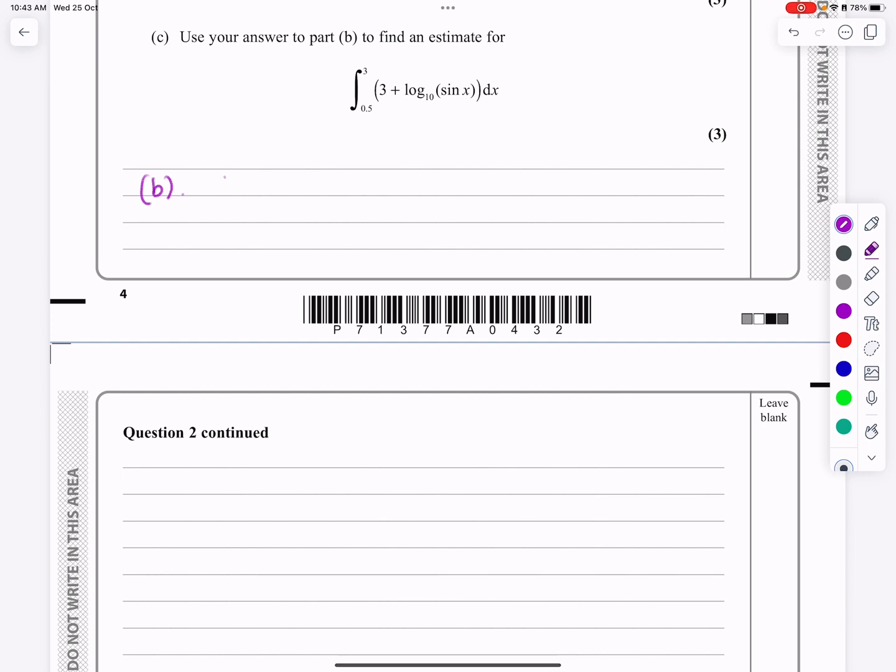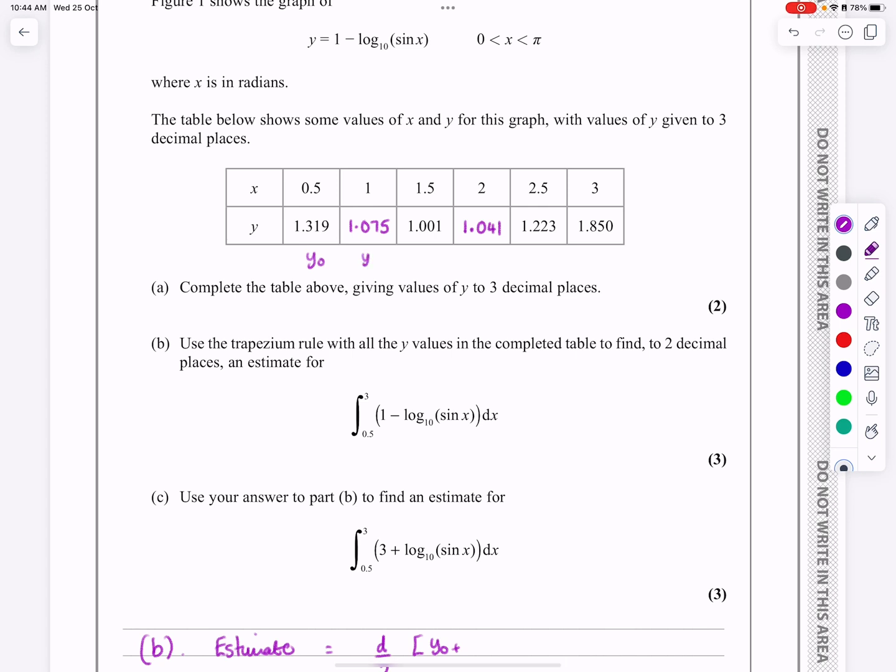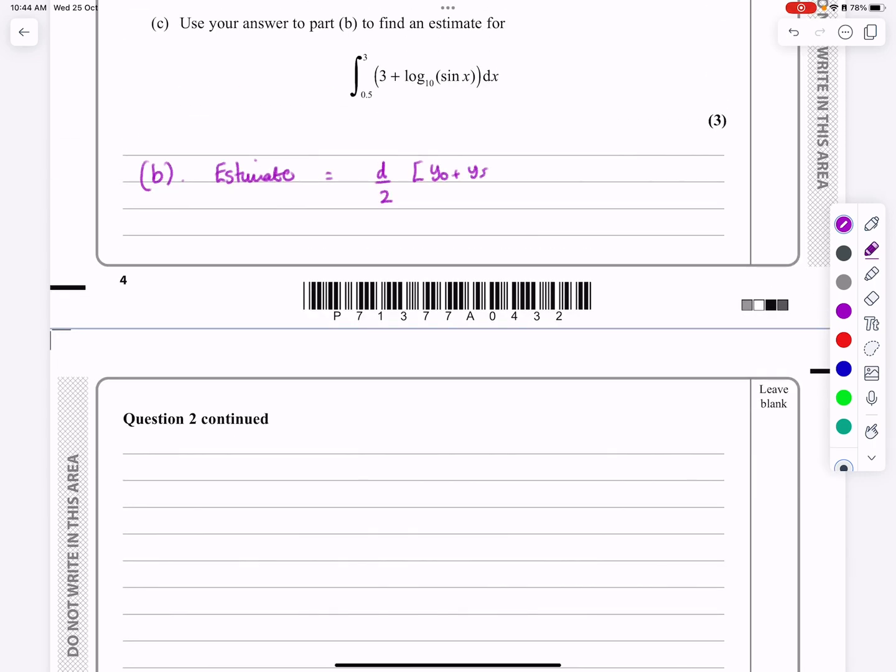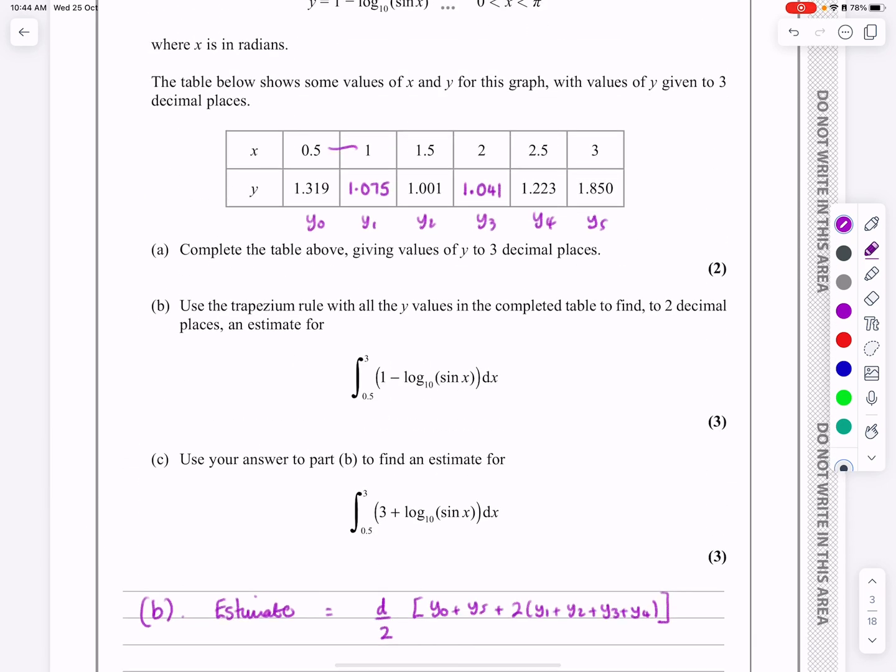This is simply putting the trapezium rule in for this one, and our trapezium rule says that our estimate will be d over 2, and then it's going to be y0 plus y5, and then two lots of everything else. So y1 plus y2 plus y3 plus y4. So I always write that in. That's my version of the trapezium rule, just to remind myself of what I'm doing each time. So d, the gap between the values here, is 0.5.